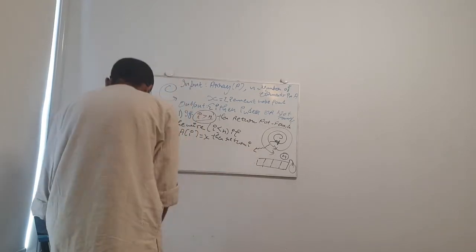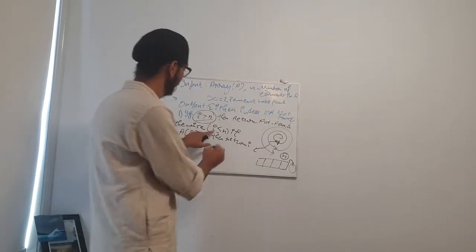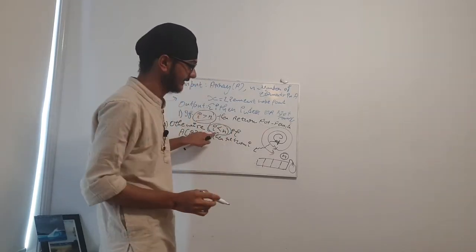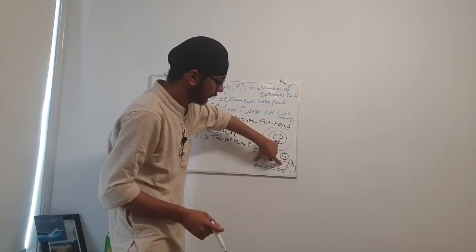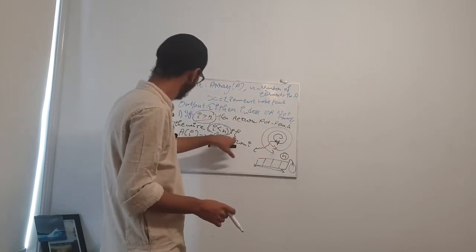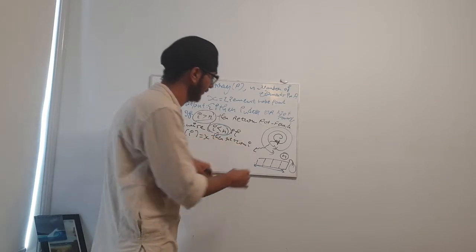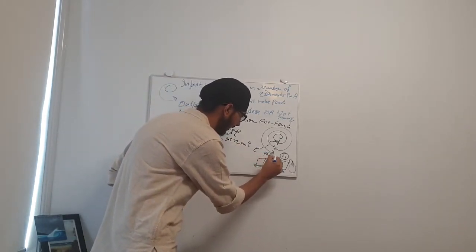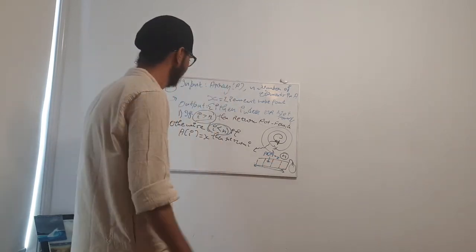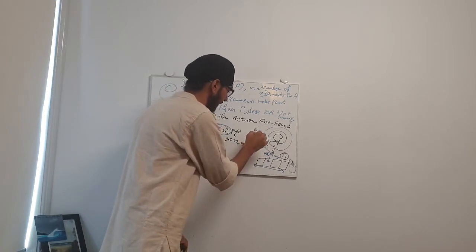What does this mean? This means that otherwise check whether I is less than or equal to N. If our loop is looping over an array and A of I is X, then return I. If this location is our X, then we got it. Get out of this loop and give me I.